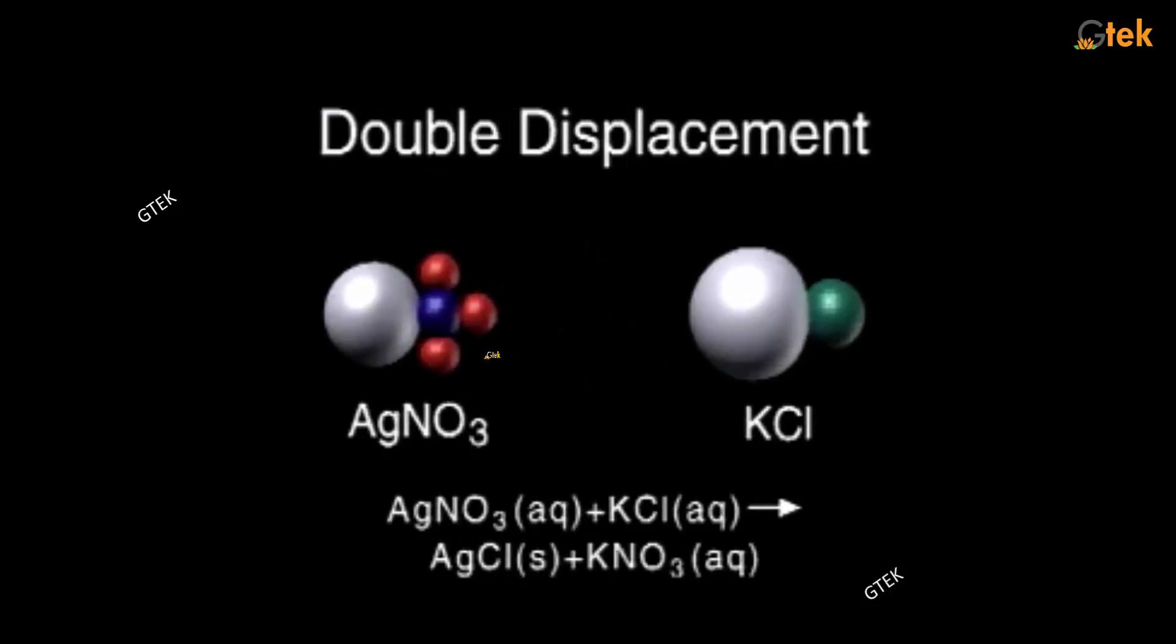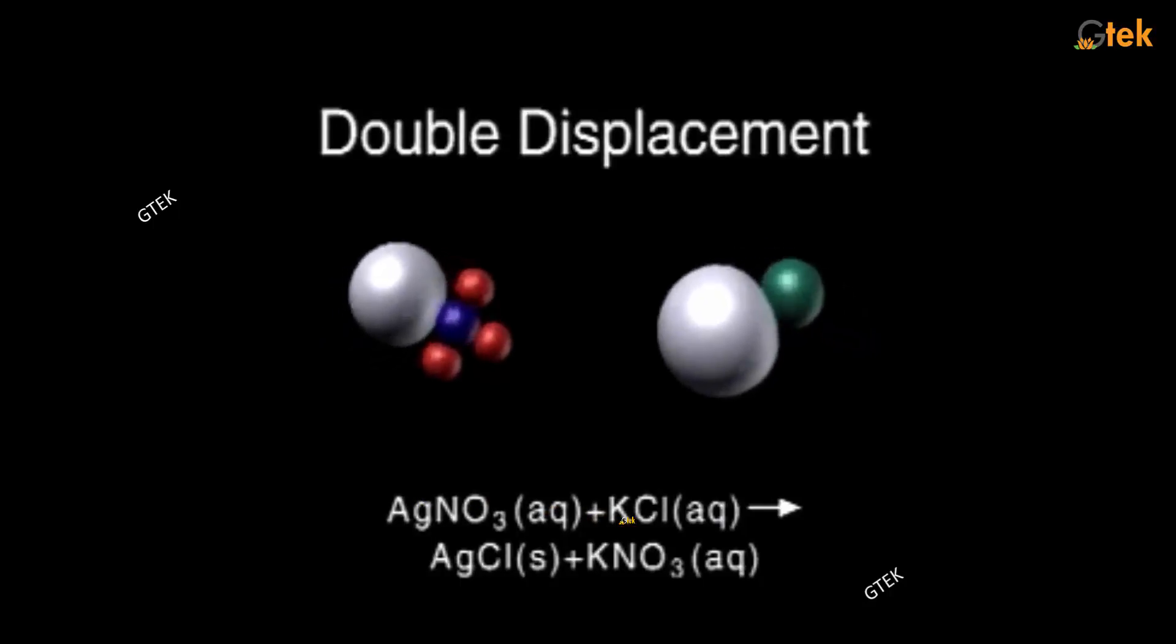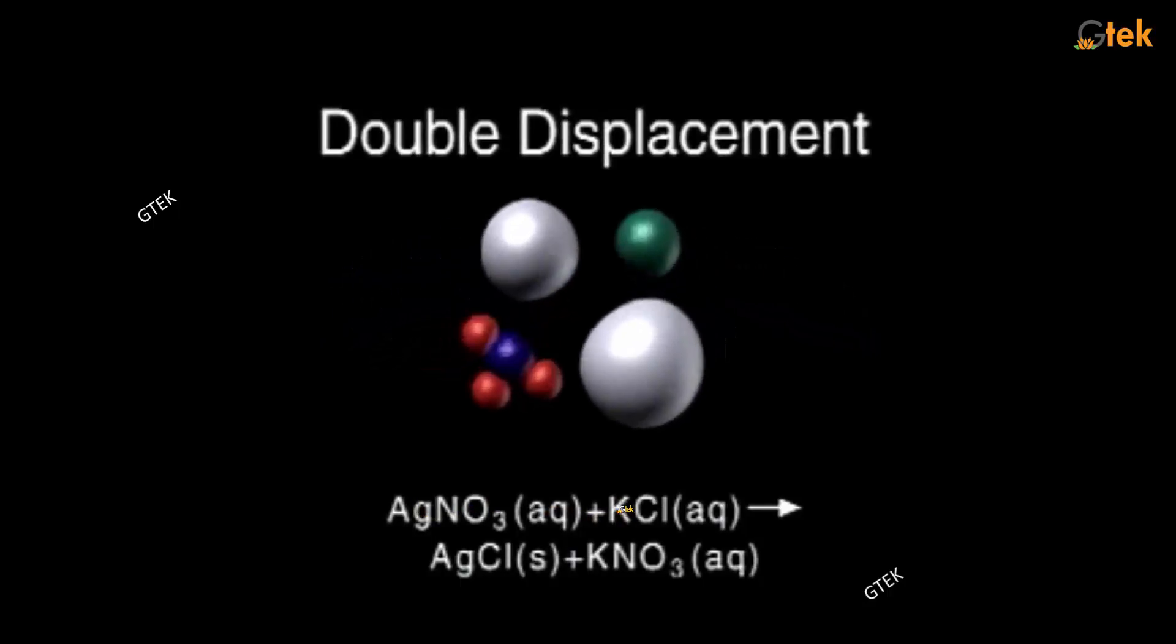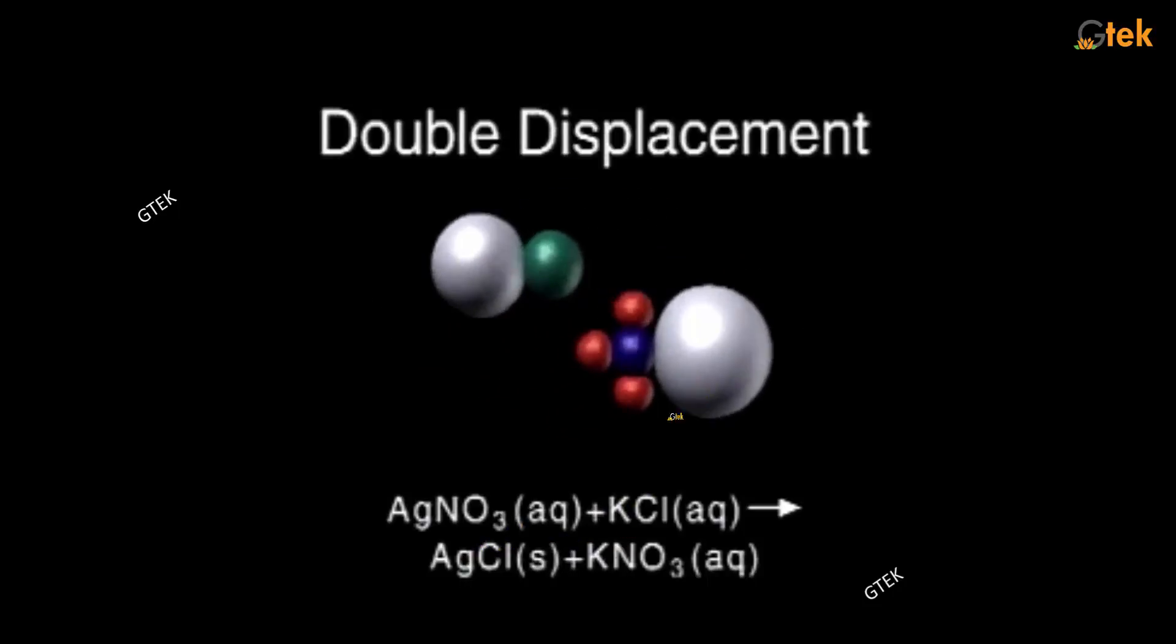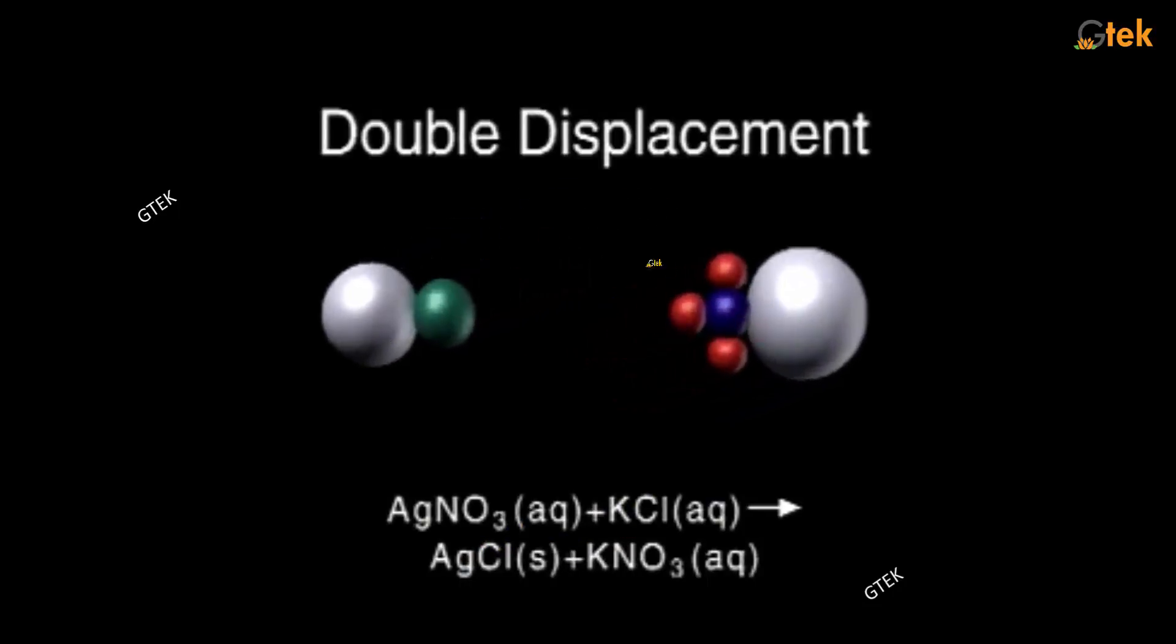Now, we got double displacement. This will leave this one and this will leave this one. Silver nitrate with potassium chloride become silver chloride and potassium nitrate. This is called as a double displacement.